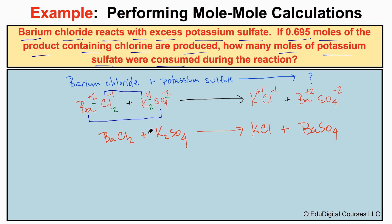Now we need to balance the chemical equation. We have two potassiums on the left, so we add a coefficient of 2 in front of KCl. Now we have two potassiums on each side, two chlorines on each side, one barium on each side, one sulfur on each side, and four oxygens on each side. The equation is now balanced, and we can start the stoichiometry problem.